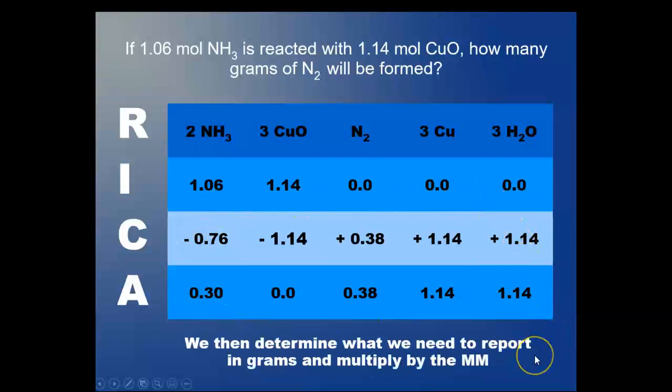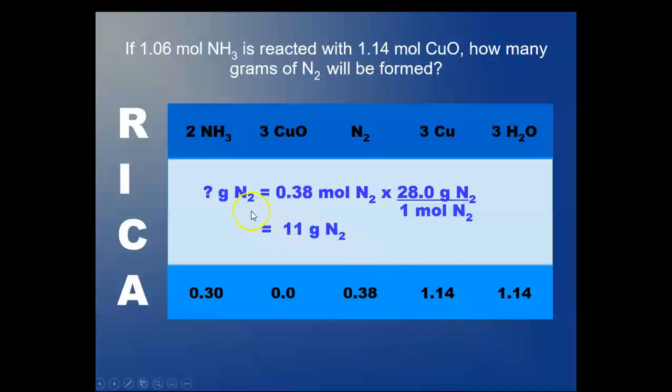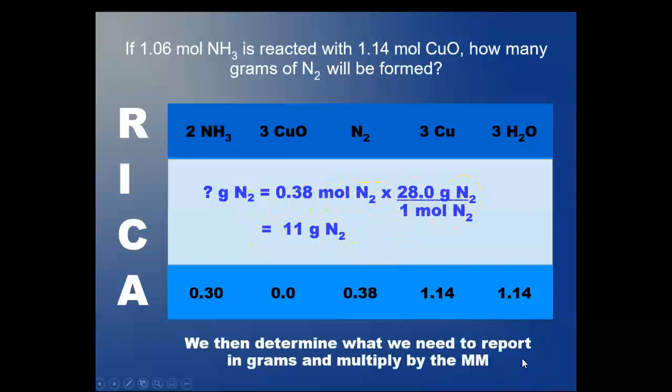We can then determine what we need to report, whatever we're asked in the problem, in grams when multiplying the molar mass. Here we're looking for the nitrogen. So we take the 0.38 moles and multiply by 28.0 grams per mole and we get 11 grams of nitrogen coming off. And that is what we report.